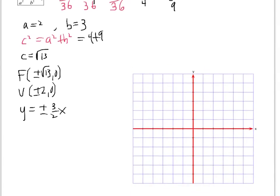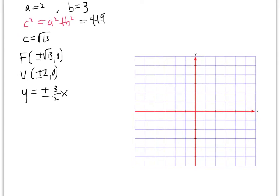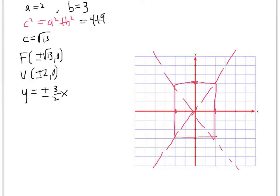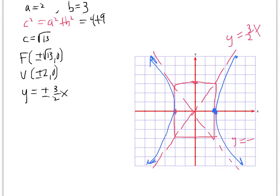So the foci are at plus or minus radical 13, zero. The vertices are at plus or minus 2, zero. The equations of the asymptotes are plus or minus b over a times x, so plus or minus 3 halves x. When graphing, it's nice to draw the asymptotes first so you can make your graph look asymptotic to them. We draw a little box — since a is 2 and b is 3 we mark off 2 on the x-axis and 3 on the y-axis. Draw lines through the origin with slope 3 halves, then start at the vertex and make the graph look asymptotic to those asymptotes. The asymptotes are y equals 3 halves x and y equals negative 3 halves x.